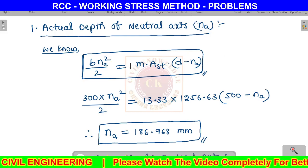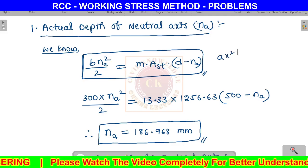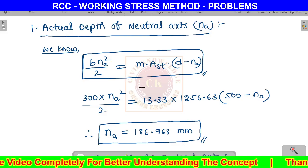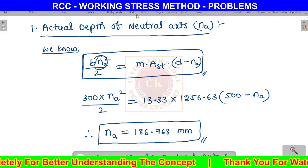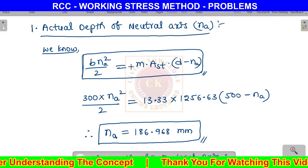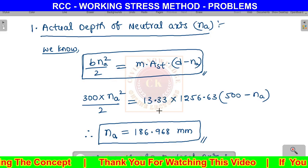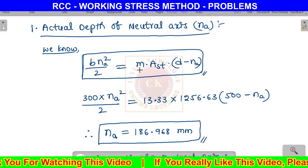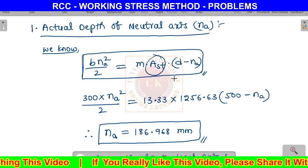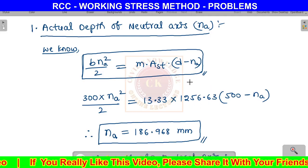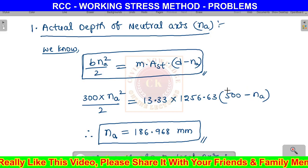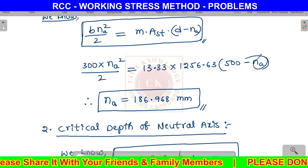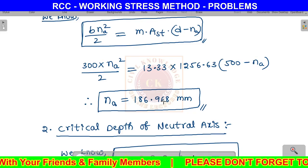We can substitute the values directly in the calculator: b is 300 mm, modular ratio m is 13.33, effective depth d is 500 mm. The actual depth of neutral axis na equals 186.968 mm.